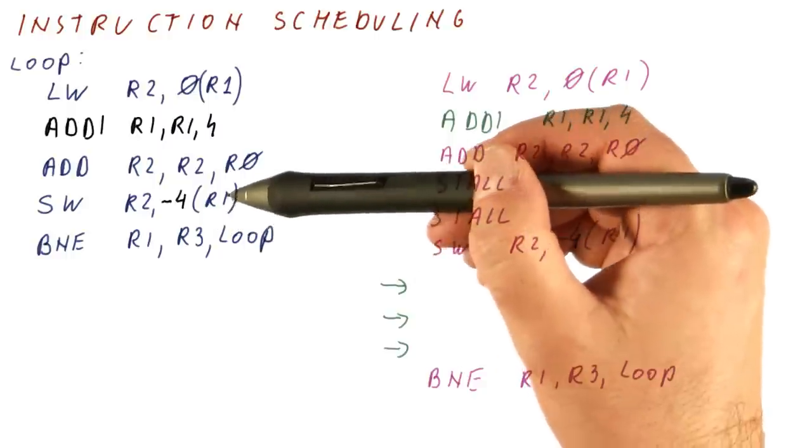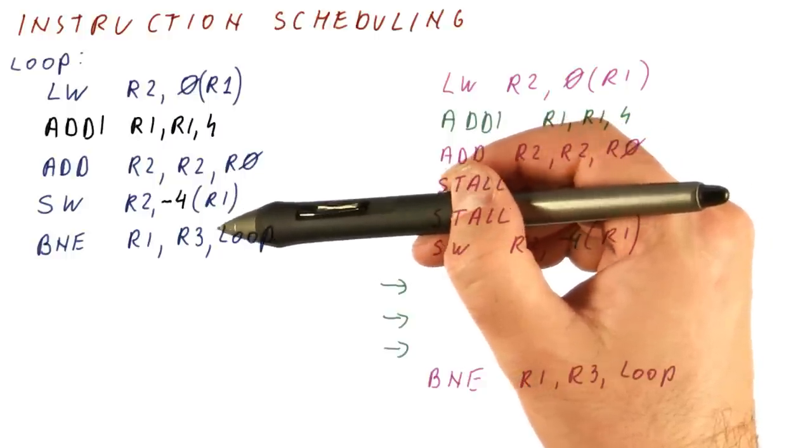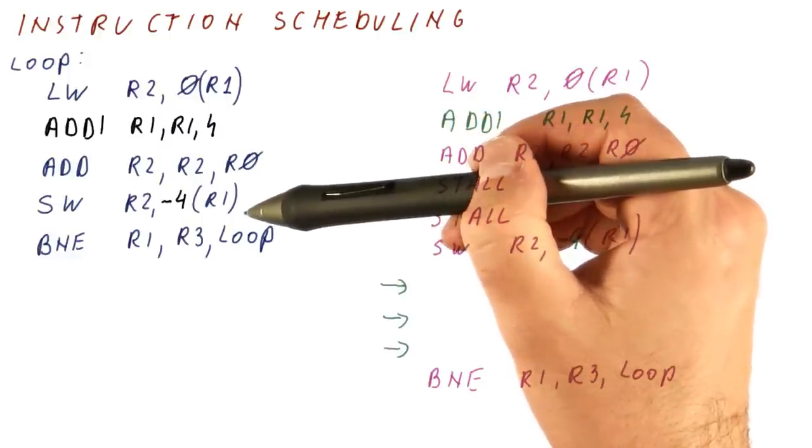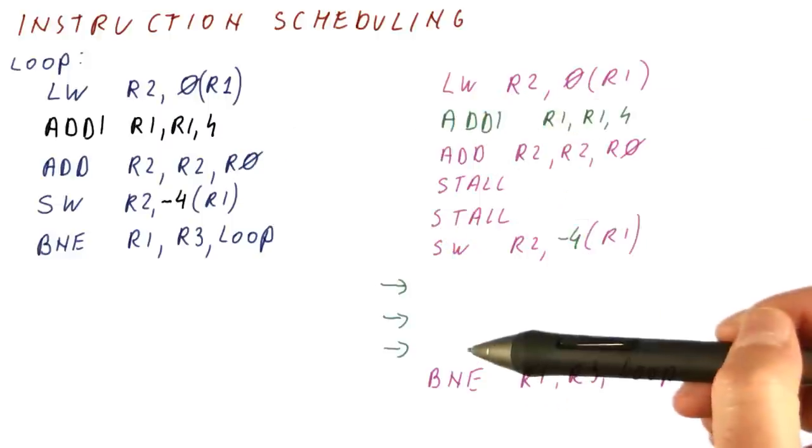So pretty much the idea of instruction scheduling is to find instructions that can be done in place of stalls and thus avoid having too many stalls in the processor schedule.